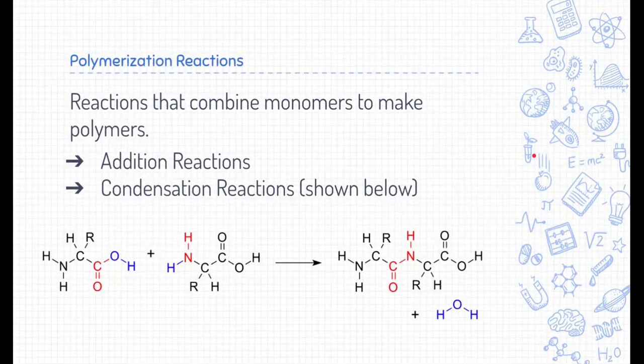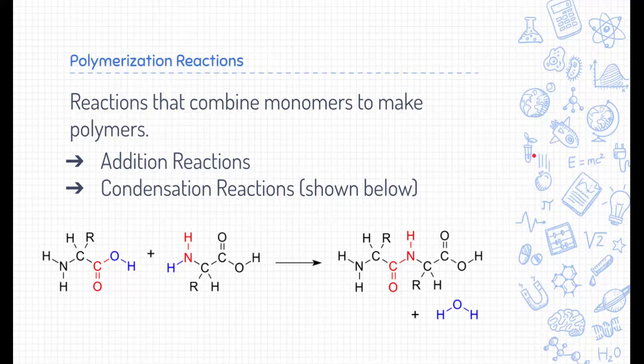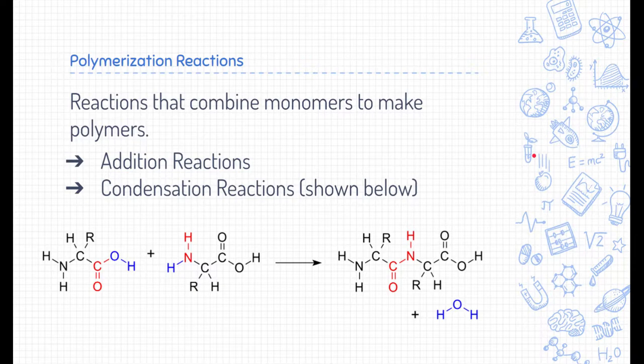So how are polymers made? Polymers are made through two important reactions called polymerization reactions. These reactions take monomers and combine them together to make large polymers.